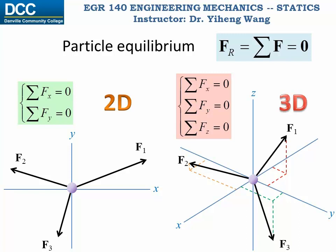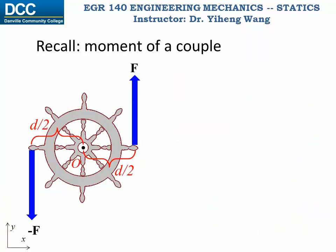However, a rigid body has shape and size, and it is not necessarily static even if the resultant force acting on it is indeed zero. For example, if you recall the moment of a couple, the two forces acting on this wheel are indeed in equilibrium.